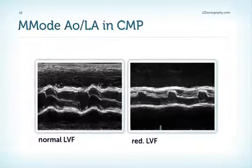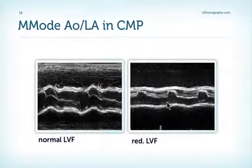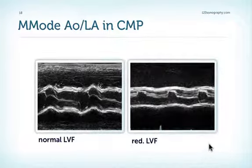Here's an example of a patient with normal LV function showing normal opening of the aortic cusps, compared to this patient with reduced LV function showing premature closure. Certainly M-mode cannot be used to quantify LV function, but it is a nice sign which you can interpret when you know it happens in the case of low output.